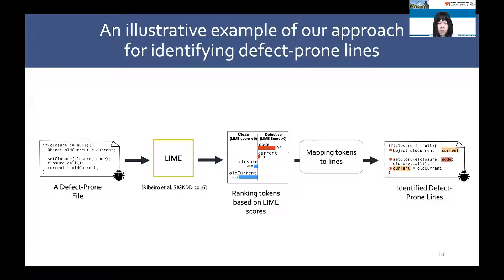To make the audience clearly understand how our approach works, I will show an example. Given a defective file, we use LIME to compute an importance score for each feature. We then identify tokens that have a positive LIME score as risky tokens, because a positive score indicates that the feature has a positive impact on the estimated probability of the file being defective. In the example, 'Node' and 'Perlin' have LIME scores of 0.8 and 0.1 respectively; hence, these two tokens are identified as risky tokens. We then define a defective code line as the line that contains at least one risky token. Therefore, three lines are identified as defective code lines.